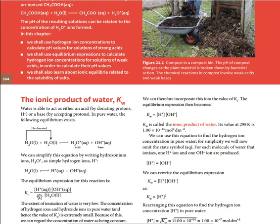Now if you calculate the equilibrium expression for this reaction, Kc is going to be the concentration of the products divided by the concentration of the reactants. But you need to know that the concentration of water is treated as one, like a pure solid. So the ionic product of water, Kw, at 298 Kelvin is 1.00 × 10⁻¹⁴ mol² dm⁻⁶, because when you multiply mol per dm³ by mol per dm³ you get that unit.